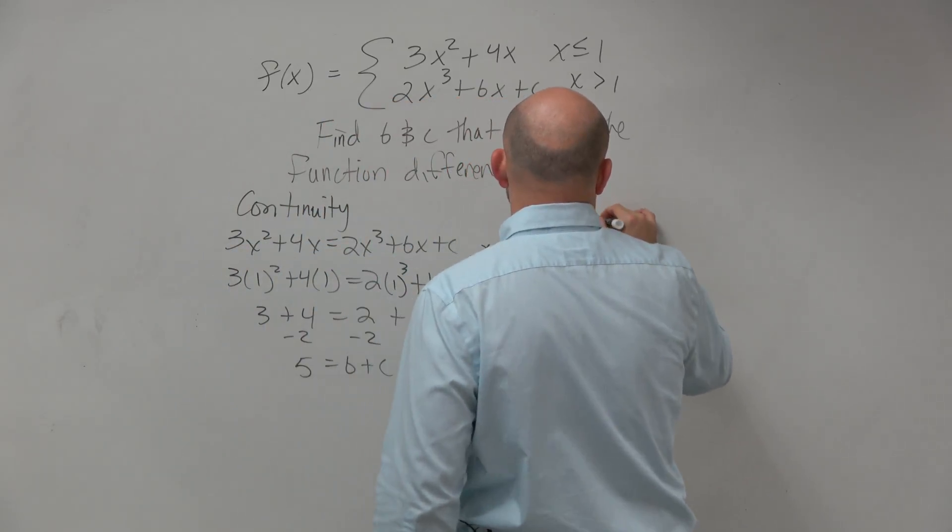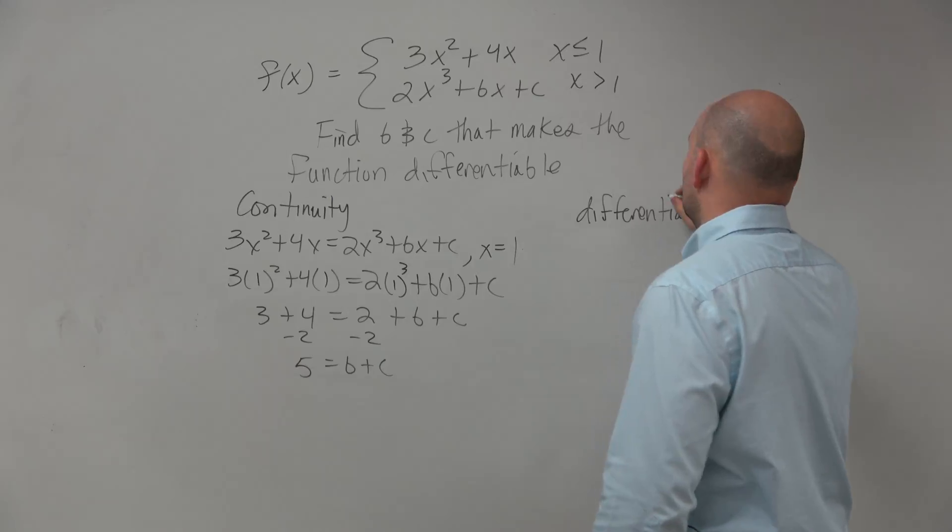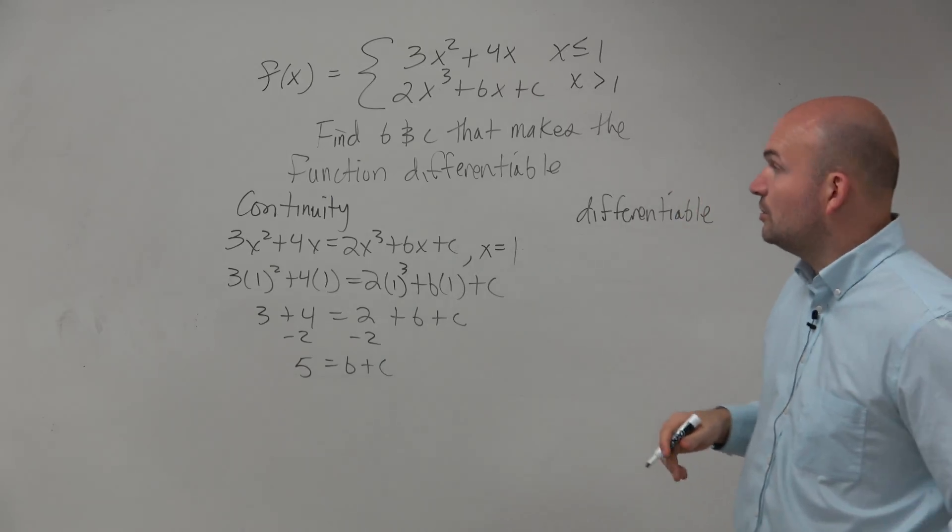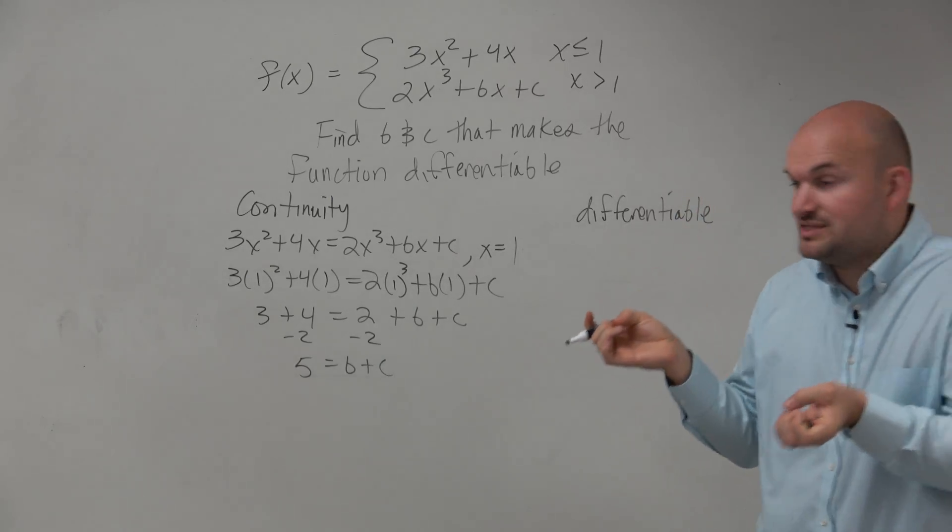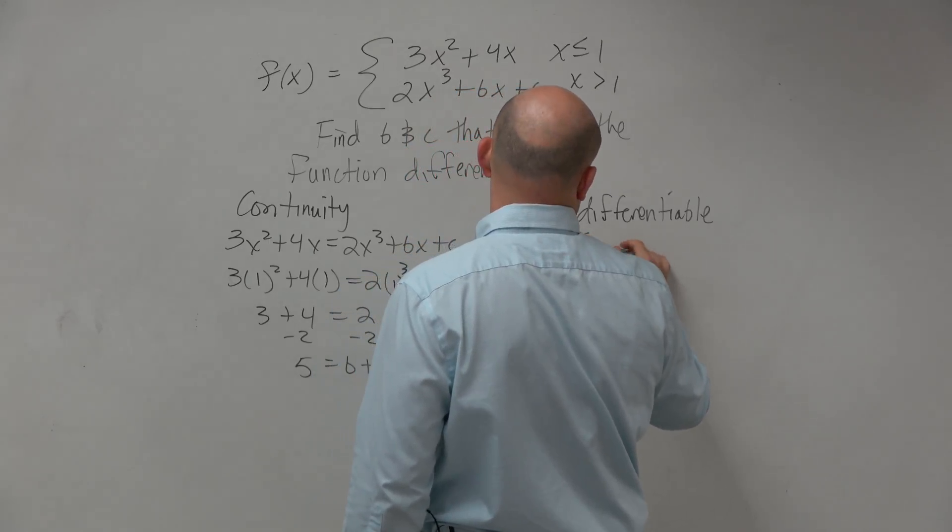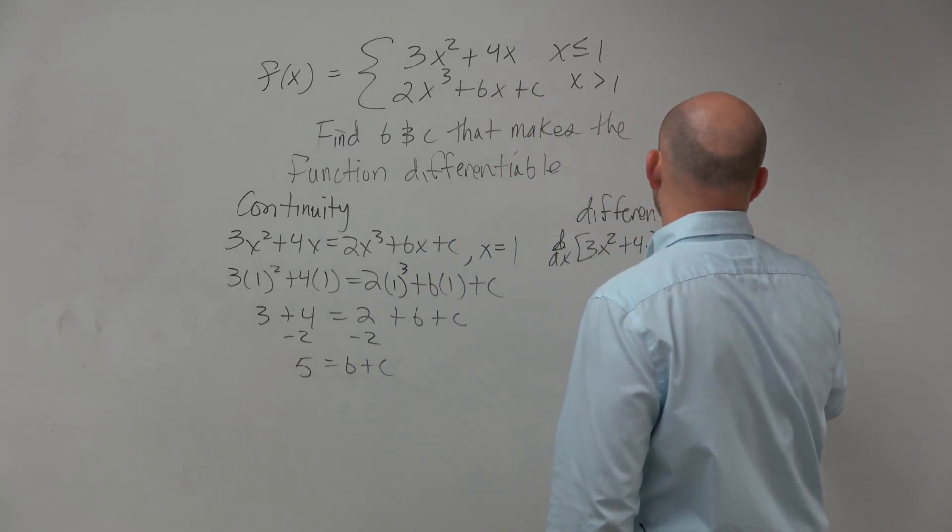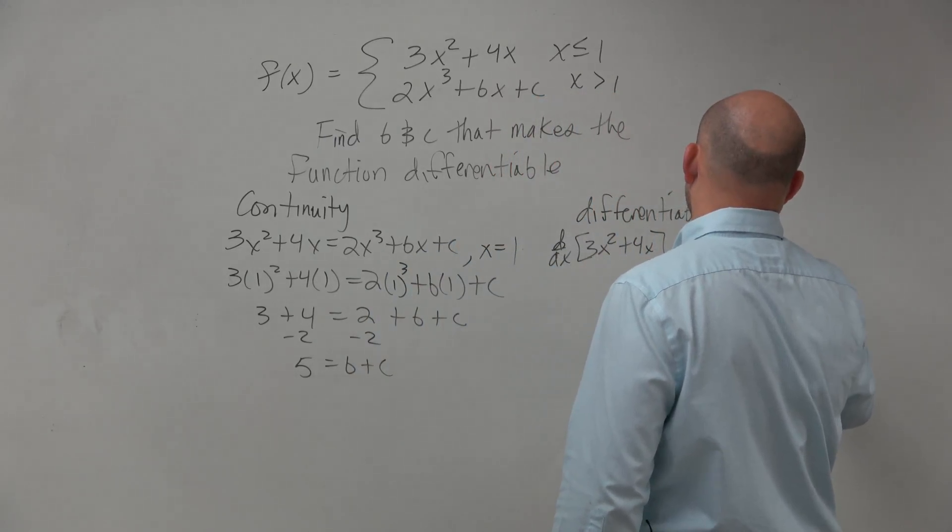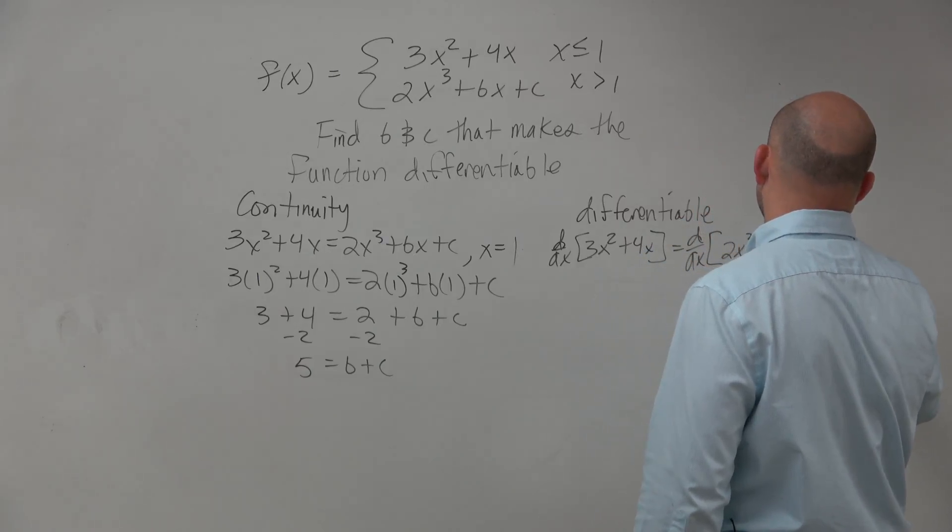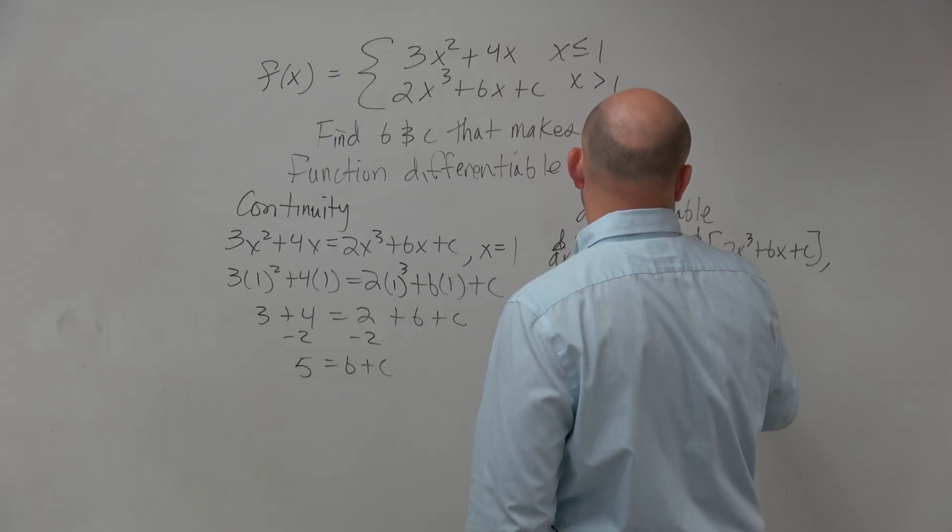Good. Now let's check differentiability. So we want to check if it's differentiable, and again, that both the derivatives on the left and right-hand side are equal. So we're going to take the derivative, and that's going to be at 1.